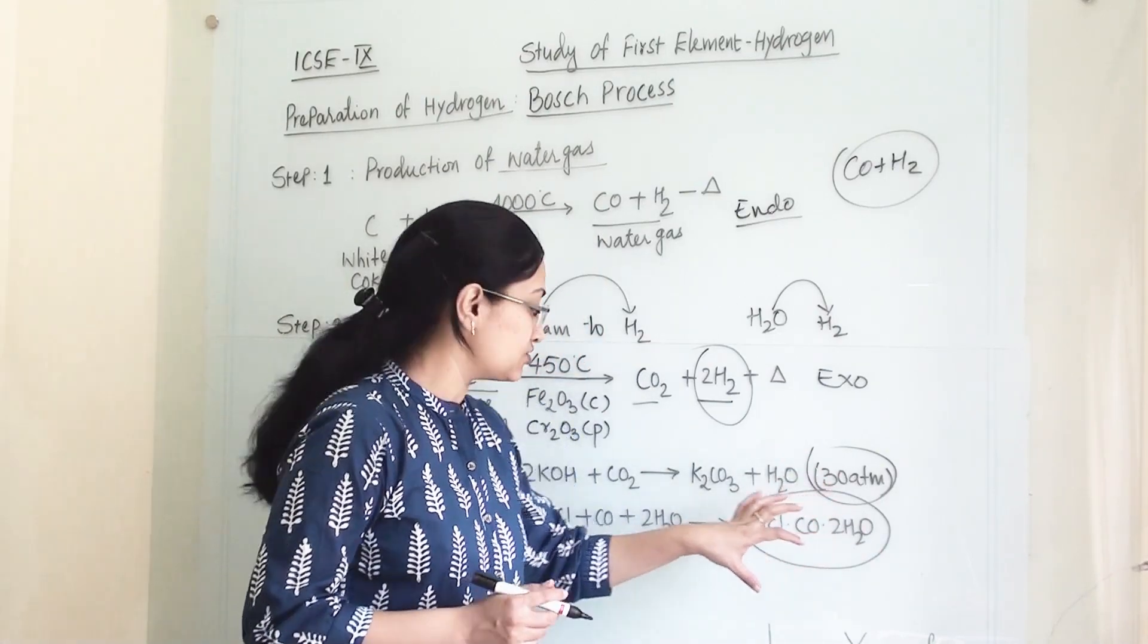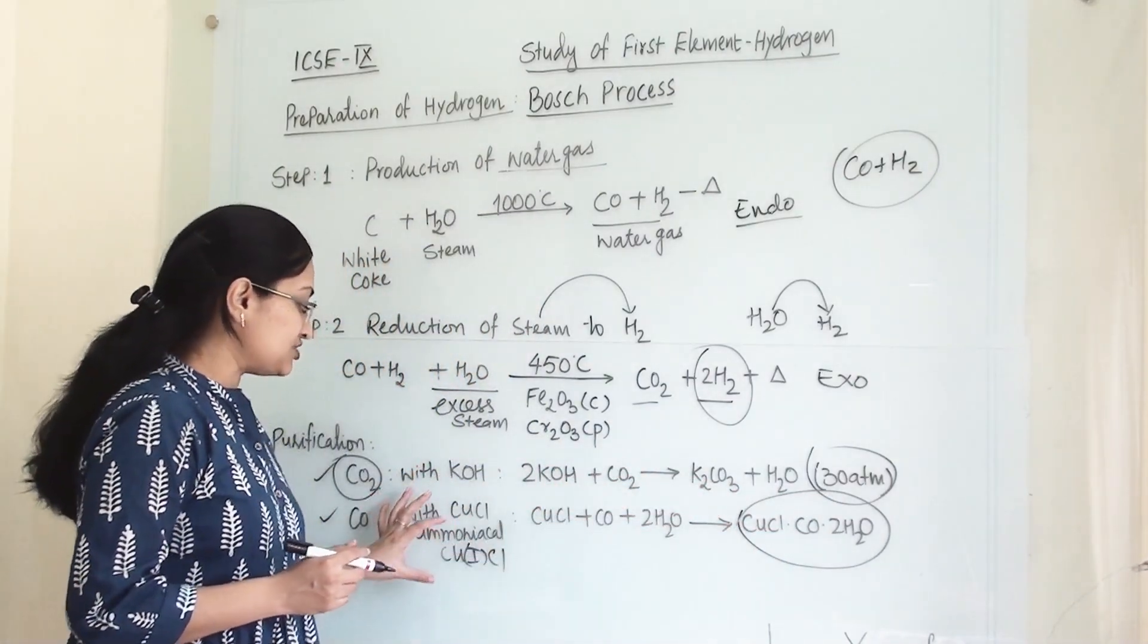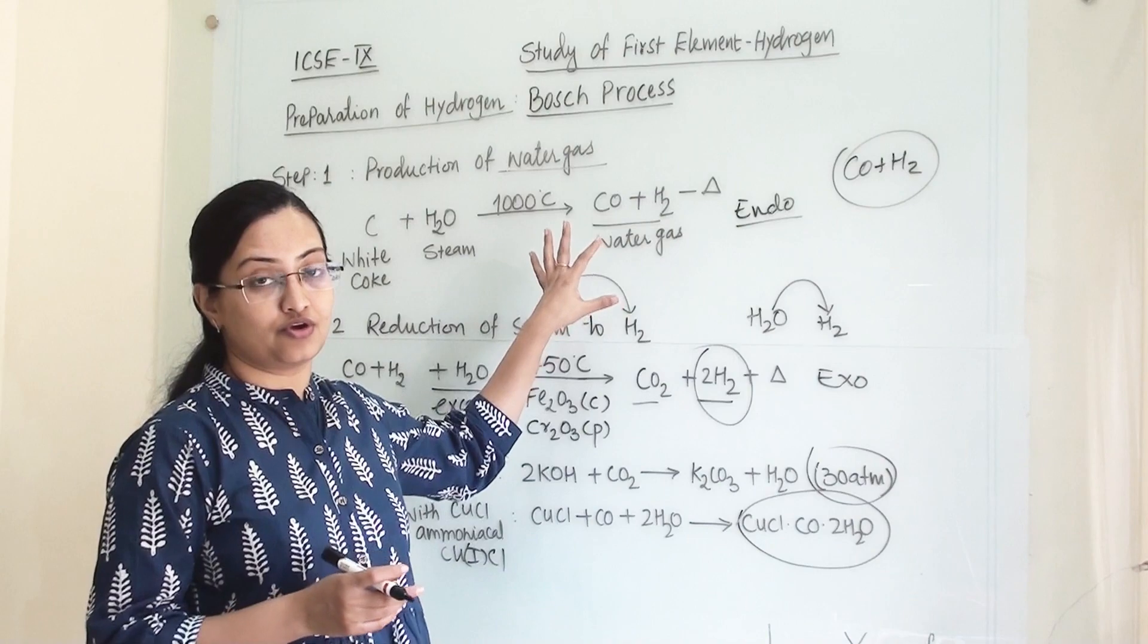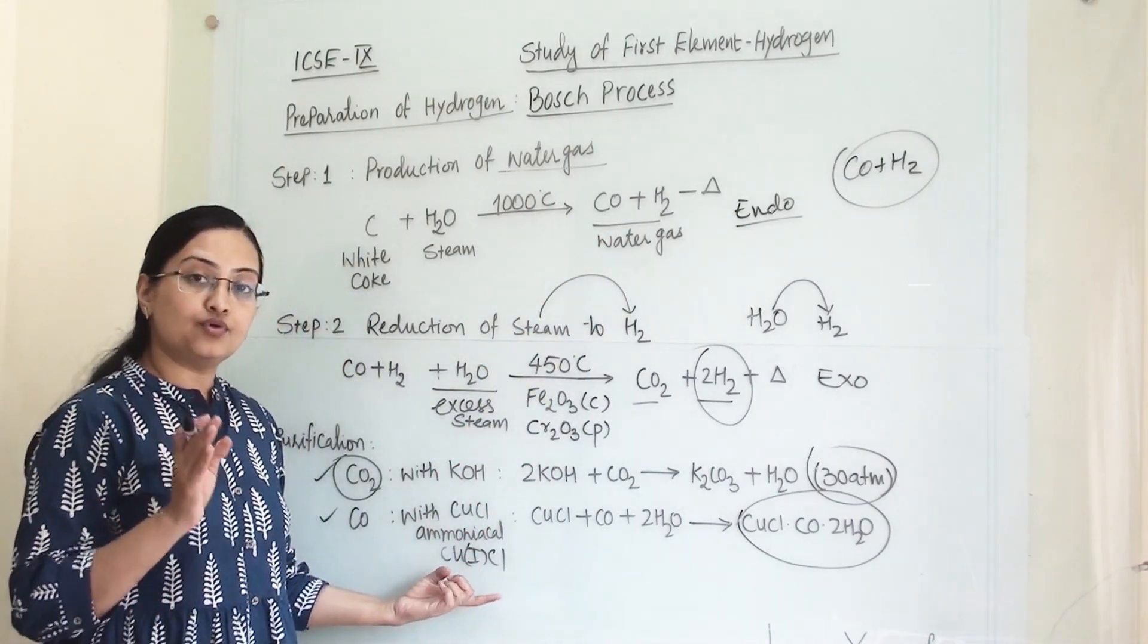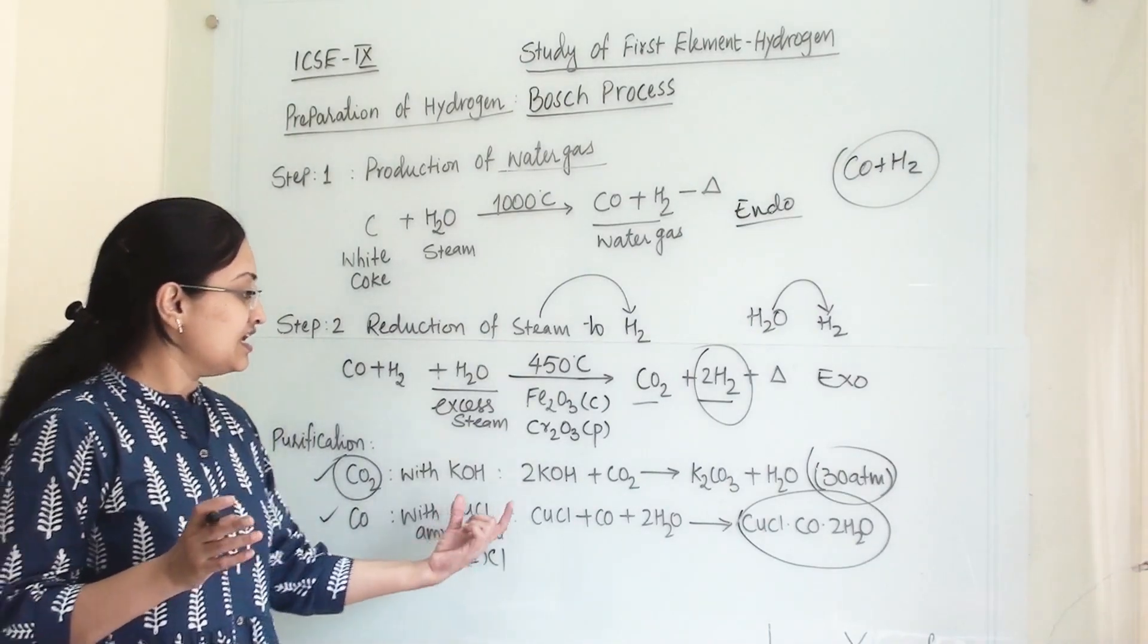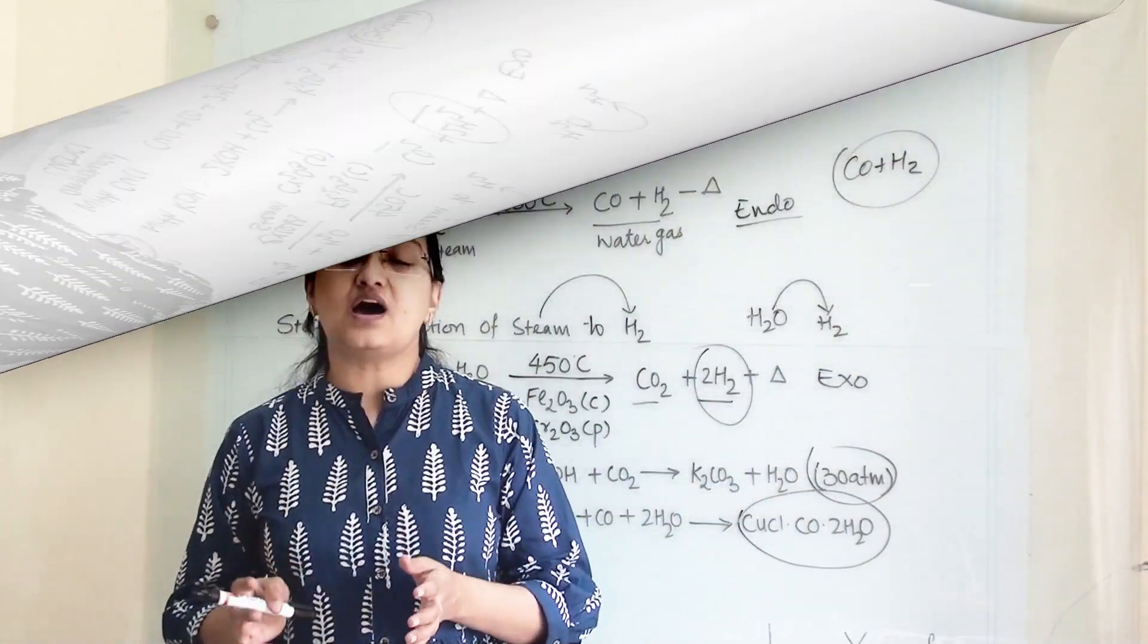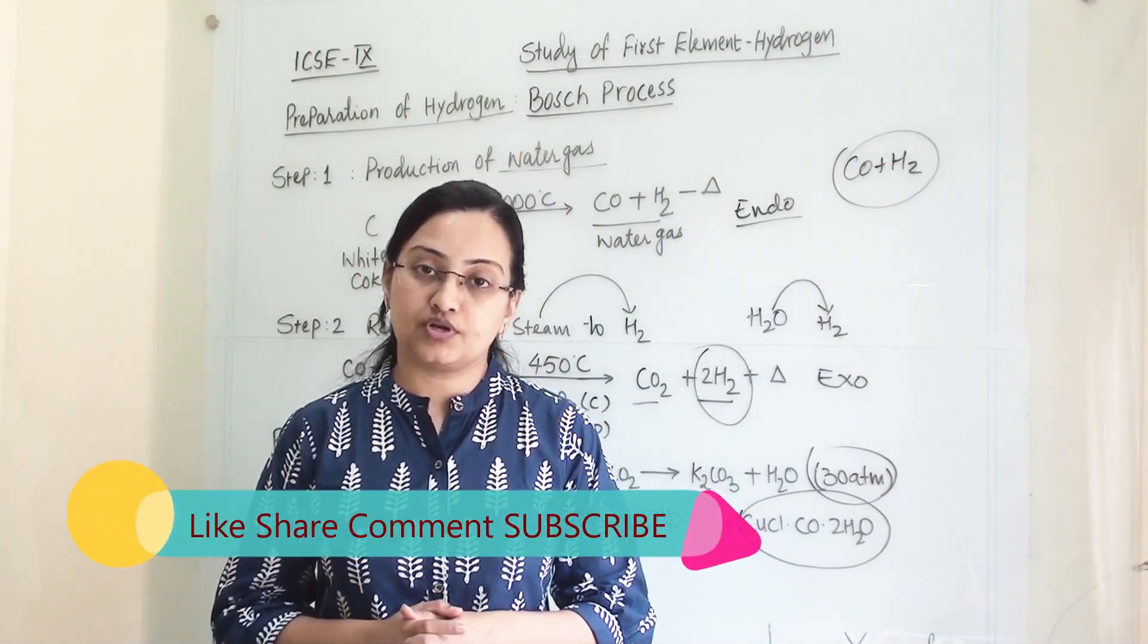Whenever the question is asked how will you eliminate the impurities of carbon monoxide from the Bosch process of preparation of hydrogen, we need to write that we have to arrange a washer bottle of ammoniacal cuprous chloride, and then the carbon monoxide will react with this solution. We have to mention this equation as well. This is how we are preparing hydrogen with Bosch process.